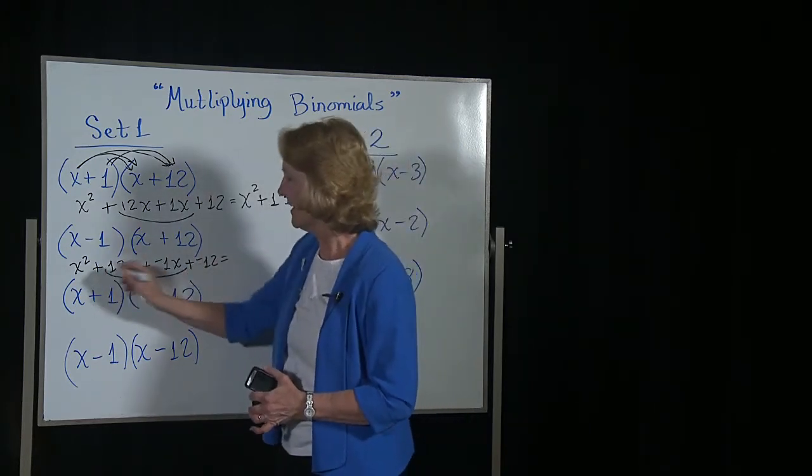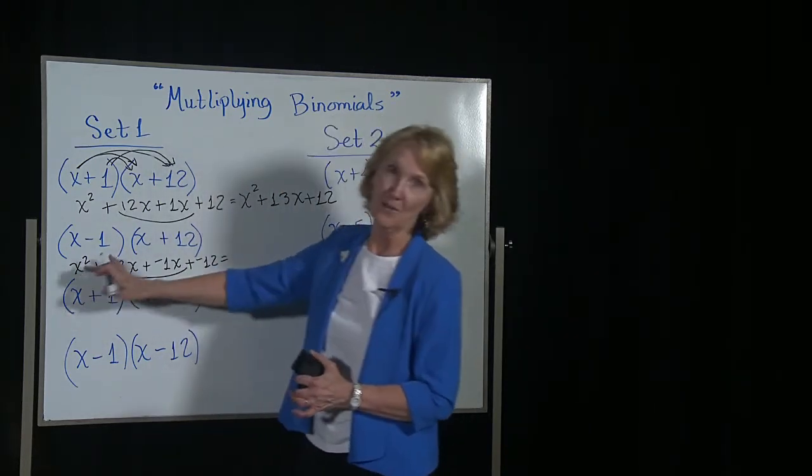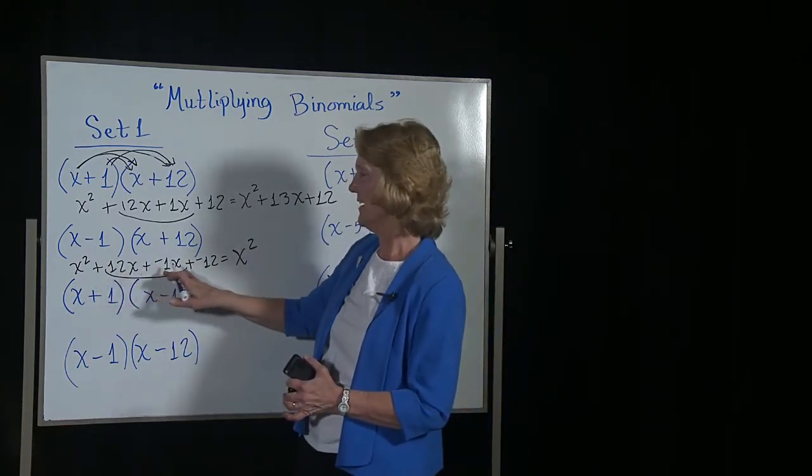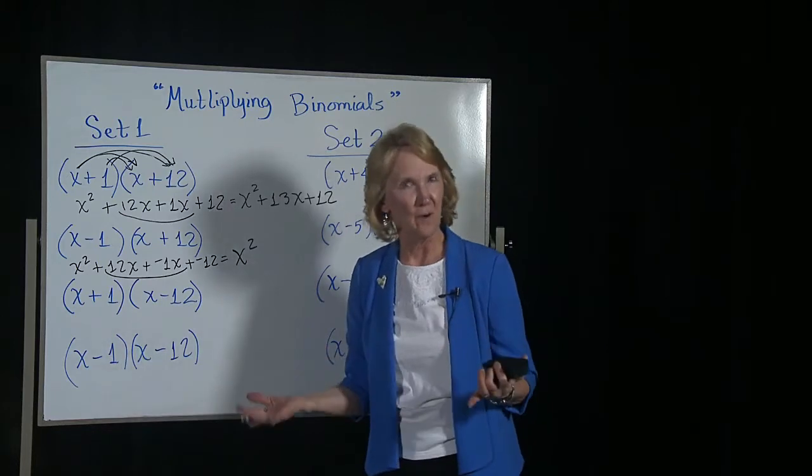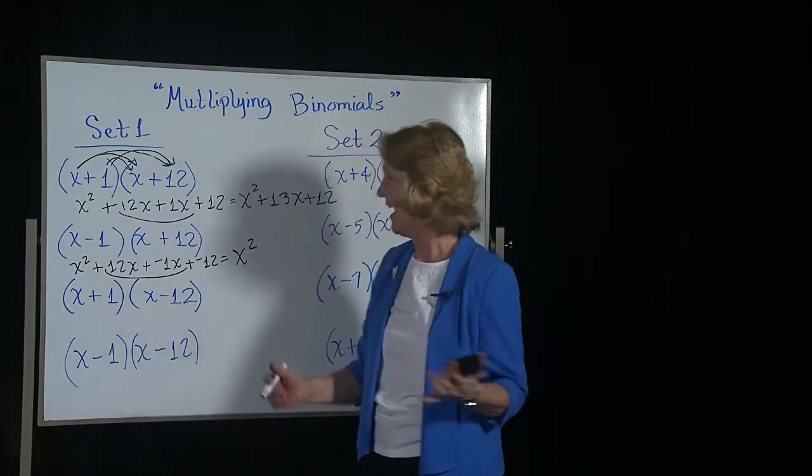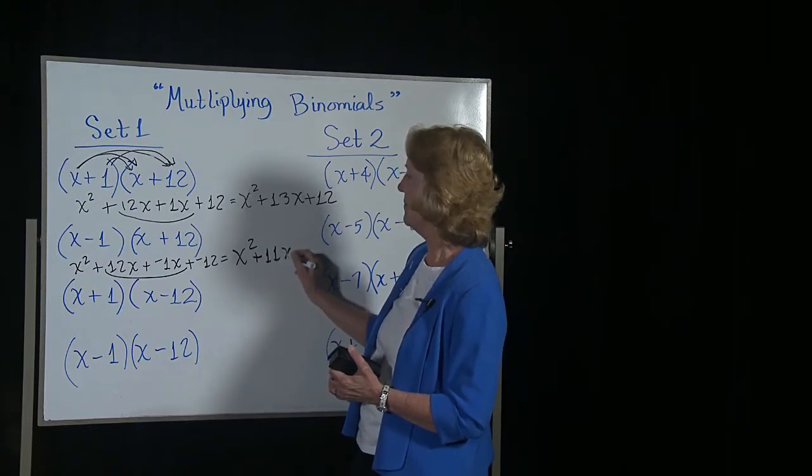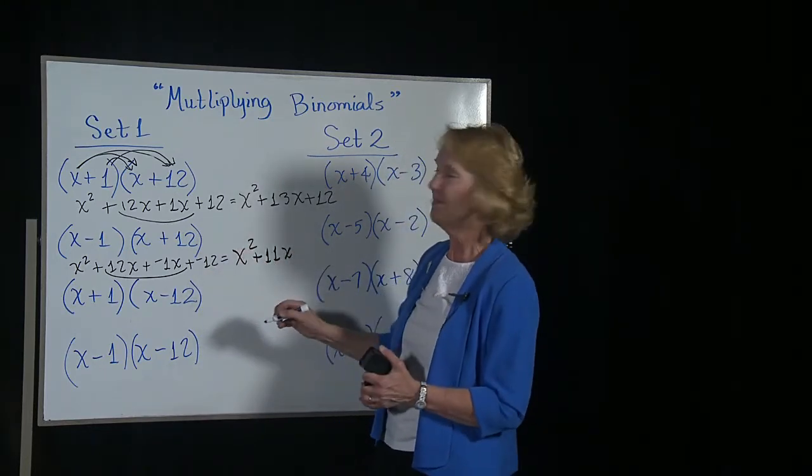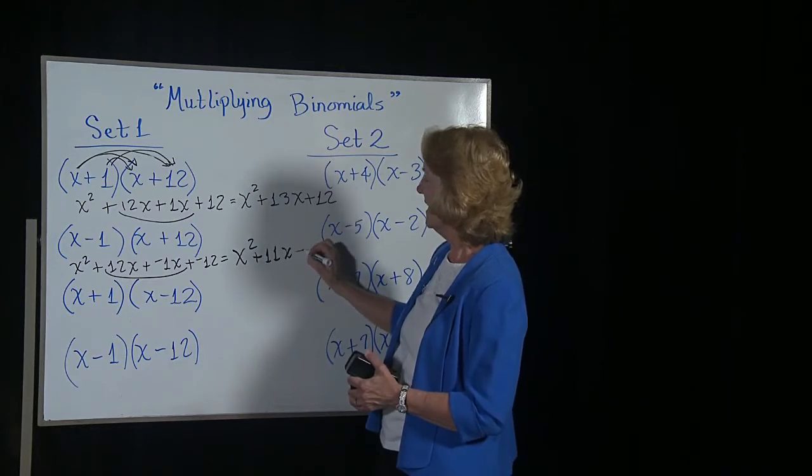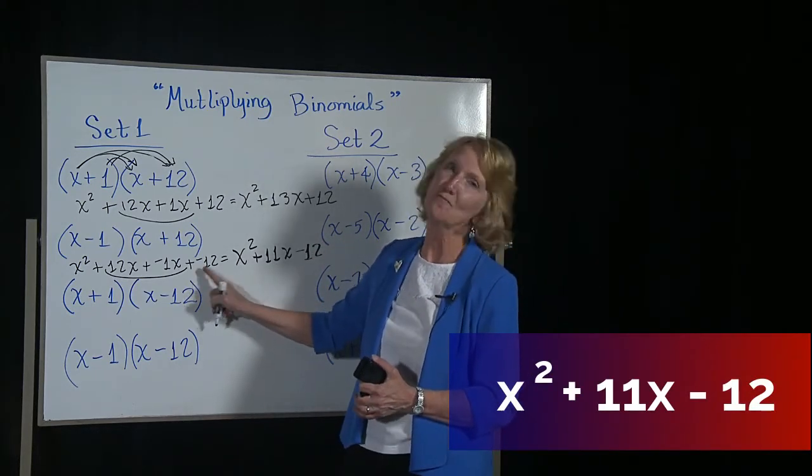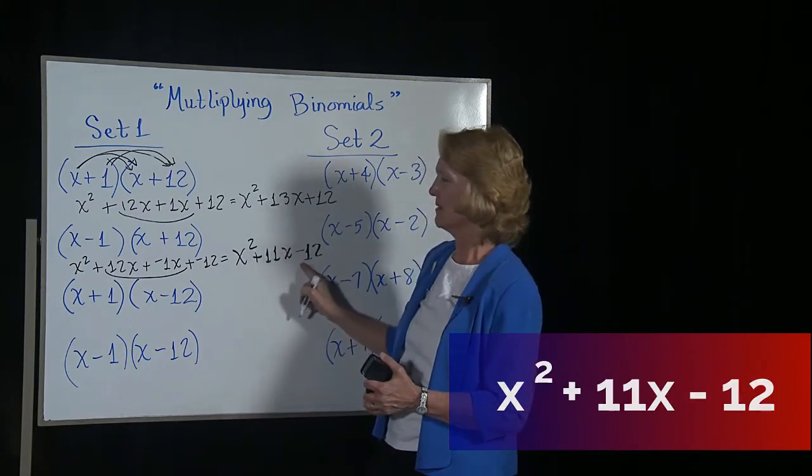We can combine like terms, so we keep the x squared. Now we have a positive 12x and a negative 1x. If you add $12 and you spent one, you would have 11 positive because you would still have money. And then you have minus 12. Is it wrong to do it this way? No. But this is more simplified.